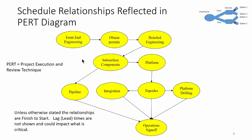We also need to understand the schedule relationships as reflected in this diagram. Front-end engineering has to happen before we can get permits. In the case of operation sign-off, we have to complete the pipeline, the integration, the top sides, and the platform drilling — we can't get signed off until we're ready to go. That means all four of those things have to be completed before we can do the operation sign-off. There may be multiple requirements to be completed before the next task can start.